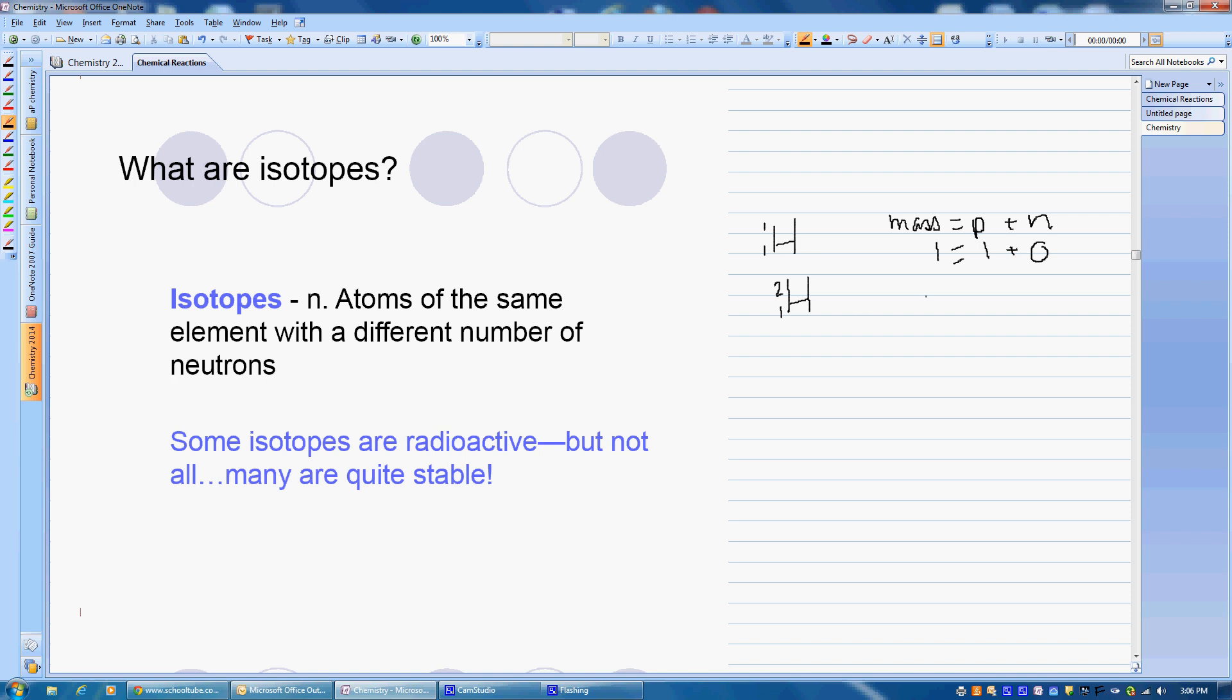In this second case, if our mass is 2, our protons still have to be 1 because we are still hydrogen, so that number has to stay the same. So this time we have 1 neutron.